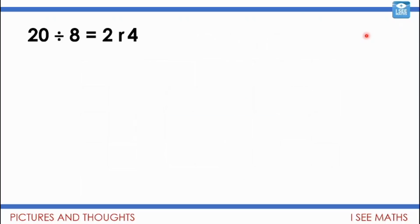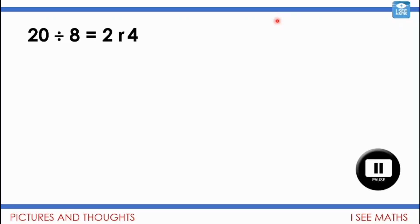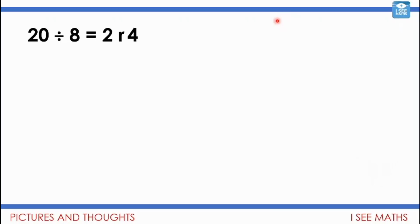So 20 divided by 8 equals two remainder four. Your challenge is to pause the video — what picture can represent this calculation? Could you show it with matchsticks or an area model? Draw it or tell the screen. Well, how many eights in 20? I can show two octagons with four matchsticks left over: eight plus eight is 16, plus four is 20. Or it could be this area model: one eight, two eights, and a remainder of four.